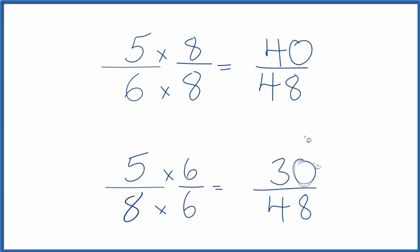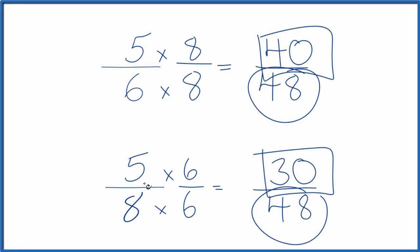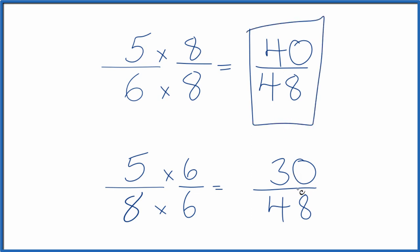Now, since we have the same denominator, we can compare the numerators to figure out whether 5/6 is bigger than 5/8. So 40 is larger than 30, which means 40/48 is larger than 30/48.